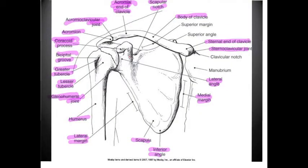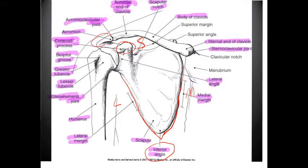Focusing on the scapula, we see its triangular shape with lateral and medial margins coming to a point at the inferior angle, and the superior margin above. Additional landmarks include the coracoid process, which is slightly anterior to the acromion; the glenoid process; the scapular notch; and the superior angle, which has a rounded density.